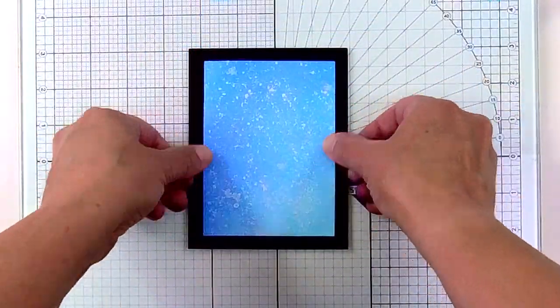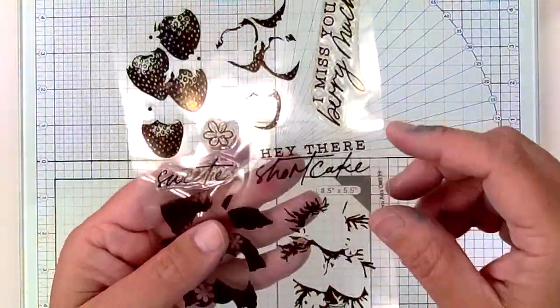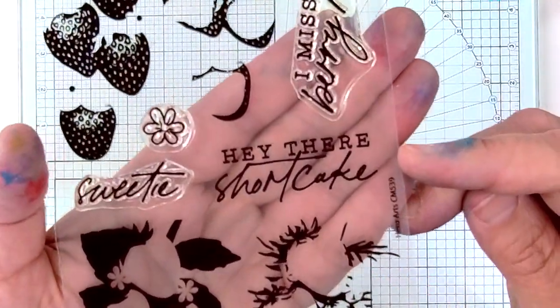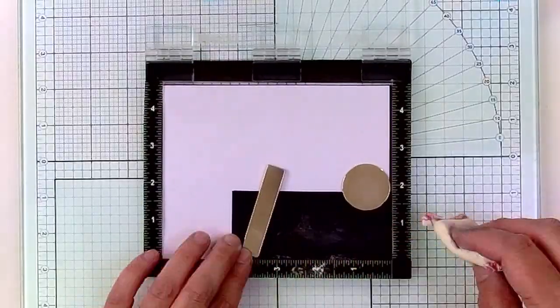Now I'm going to add that background to a black card base, and we are ready for a sentiment, and I've decided to go with hey there shortcake.